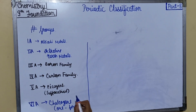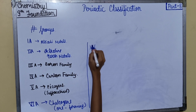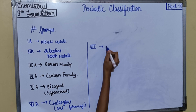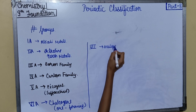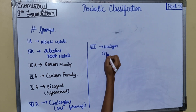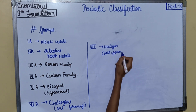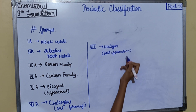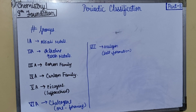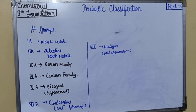Seventh group is halogens, which means salt formation. In Greek, halogen means salt producer. A salt consists of an anion and a cation. For example, common salt NaCl consists of Na+ cation and Cl- anion. The elements of this group form anions of salt easily, hence they are called halogens.